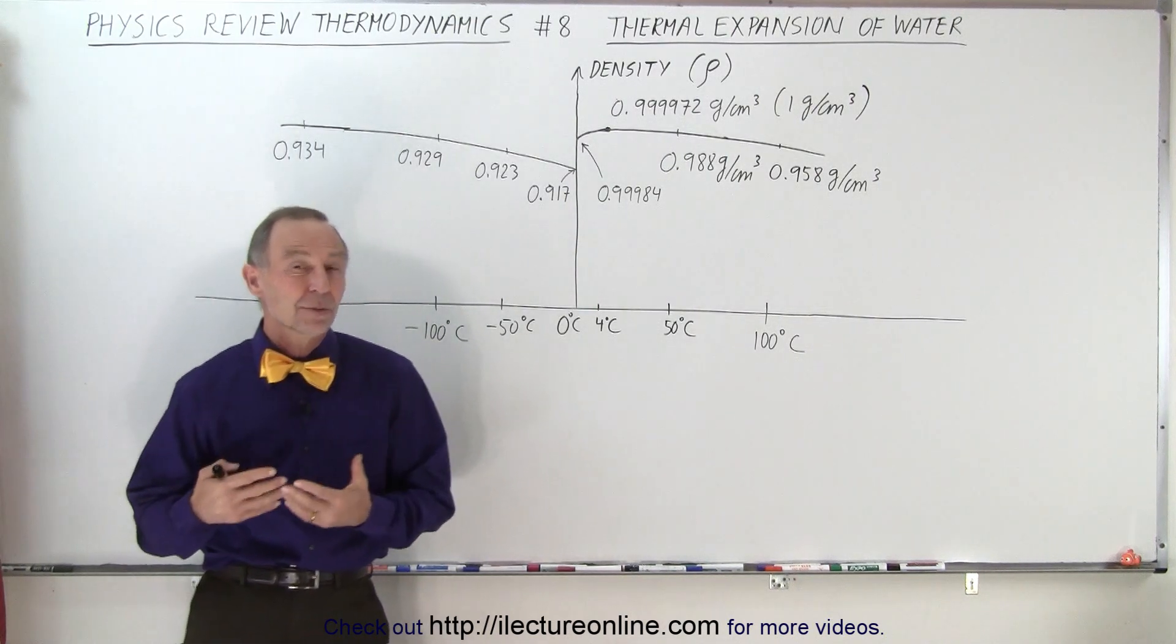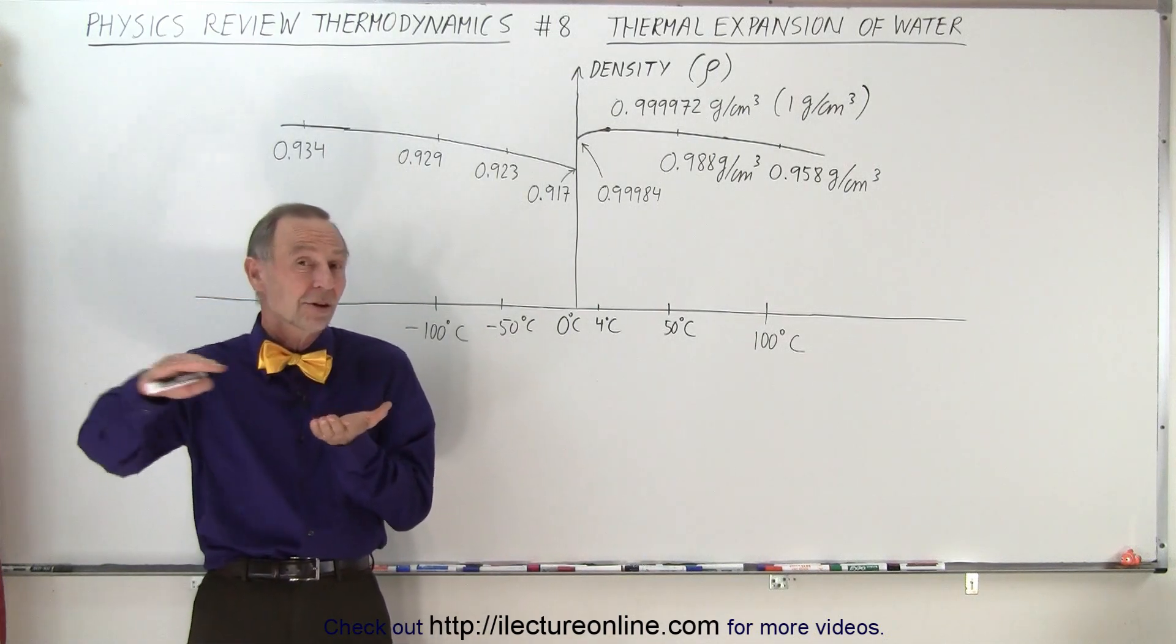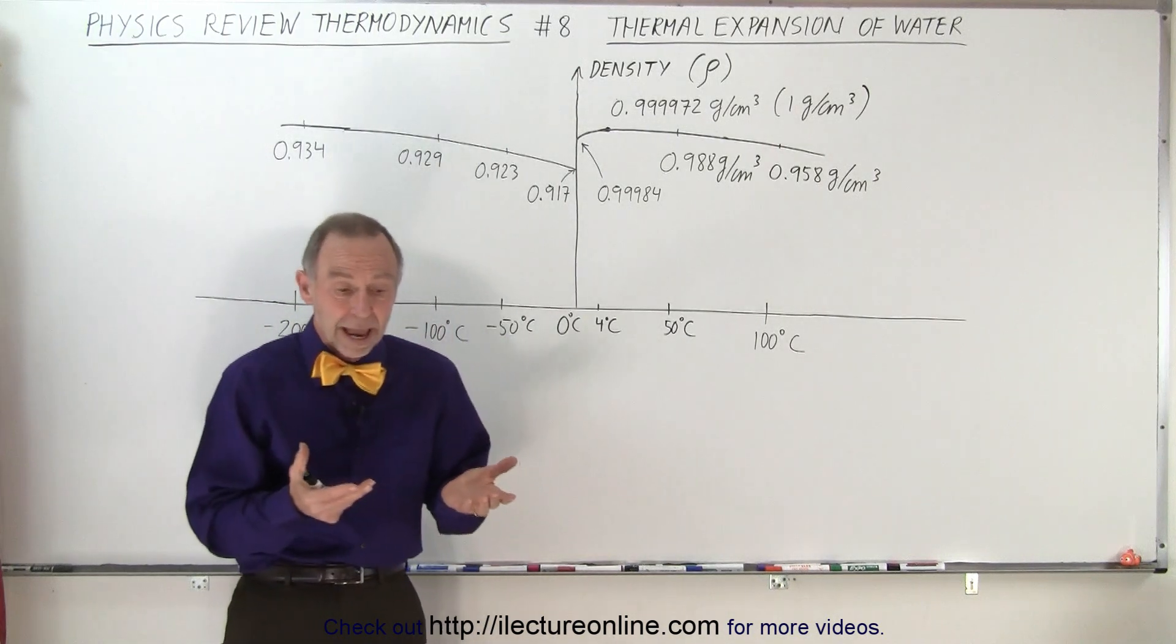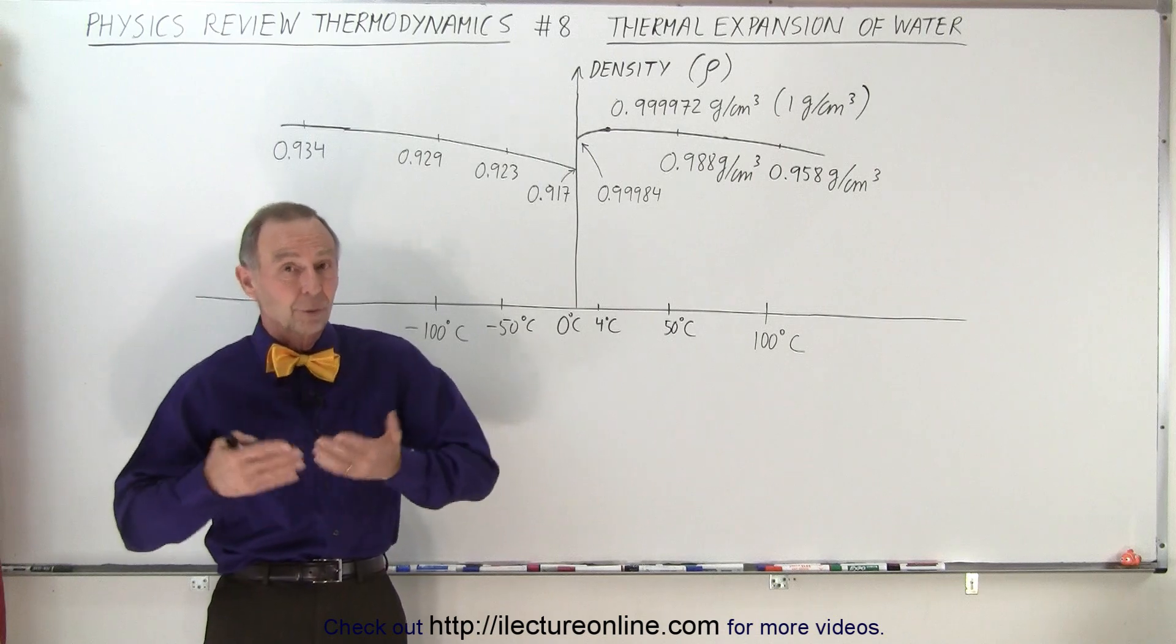And there's a special notice that needs to be made here because we tend to think that the density of water is just constant at all temperatures and the density of ice is constant at all temperatures. And ice is less dense than water. That is true, that's why ice floats.